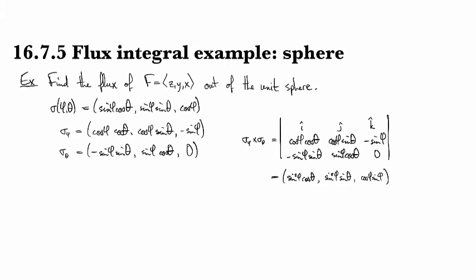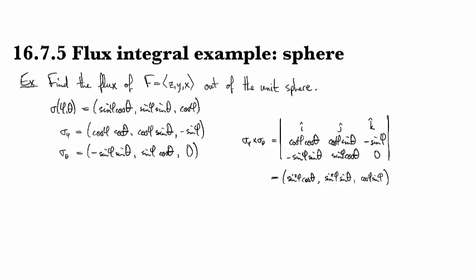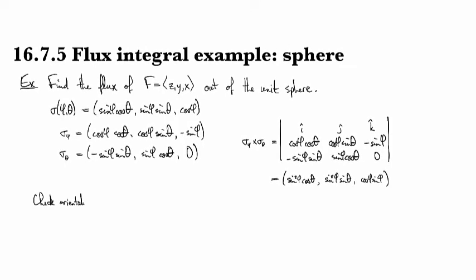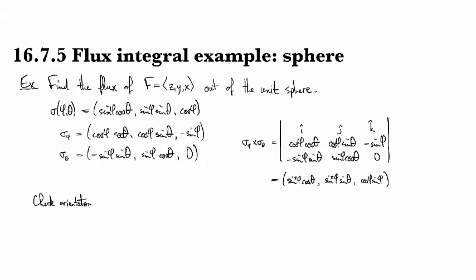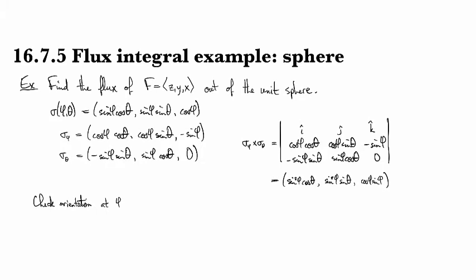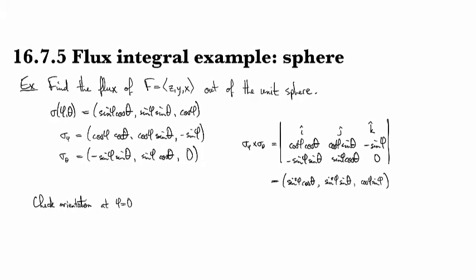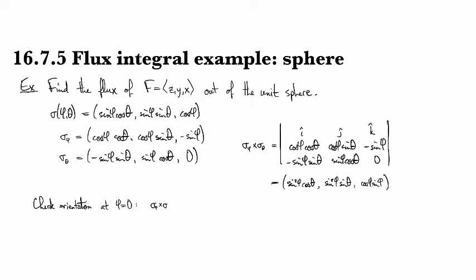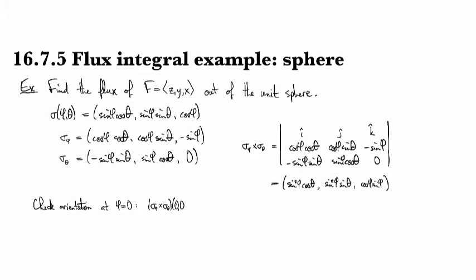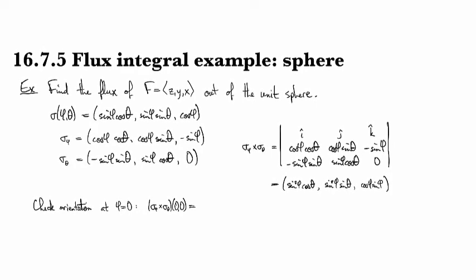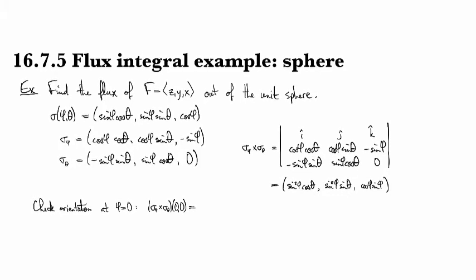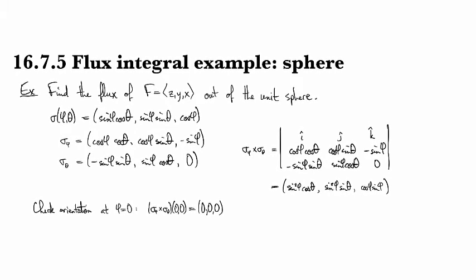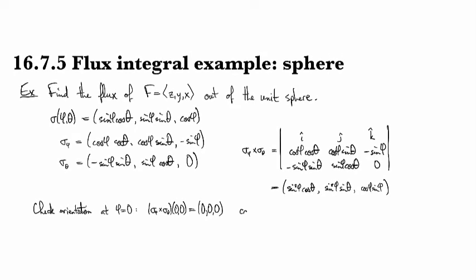All right, okay. So now, what do we need? Well, let's first check the orientation to see if we've got something that gives us a positive orientation according to the convention. So I can compute it at φ equals zero. And then in this case, what do we get? We get σ_φ cross σ_θ at zero is going to give us just zero, zero, zero. So we don't know what direction that's pointing in because it has length zero, so we can't tell.